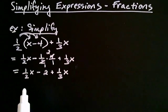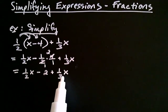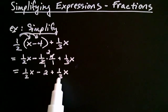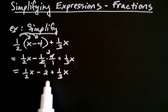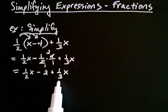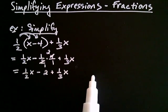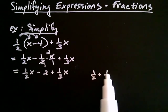At this stage I have three terms, and two of the terms are like terms — I can see that because they both contain an x. The way we combine like terms is by adding their coefficients. The coefficient of this term is one half, and the coefficient of that term is one third. So I have to add together those two fractions. Let's go off to the side and add one half plus one third.